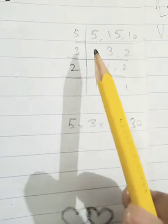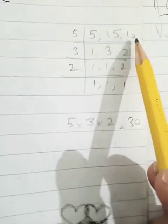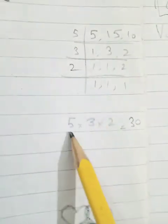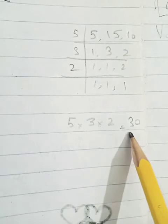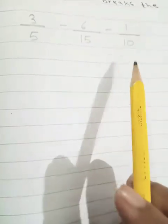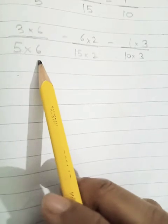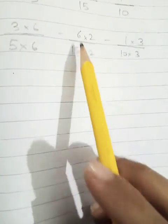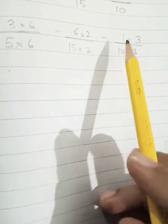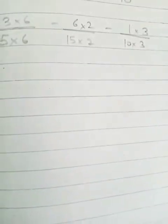See we have taken the LCM of 5, 15, and 10. It is 5 times 3 times 2 equals 30. So LCM is 30. Which means we have to make each denominator as 30.